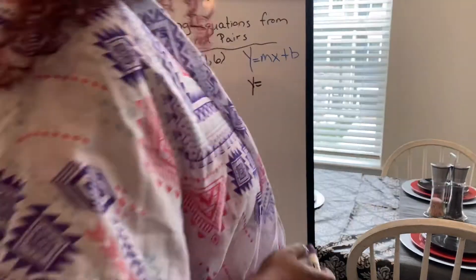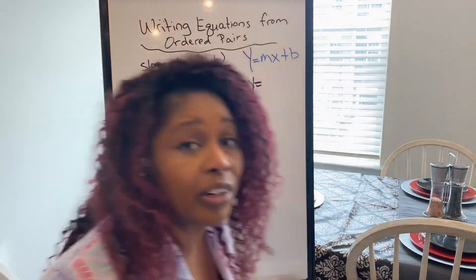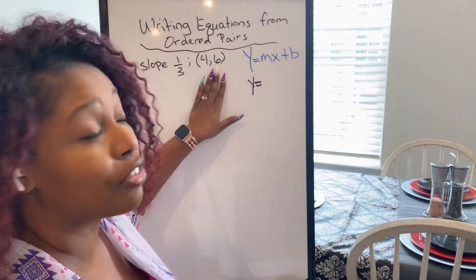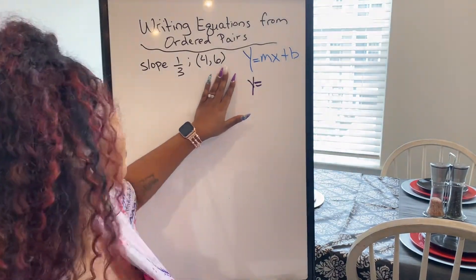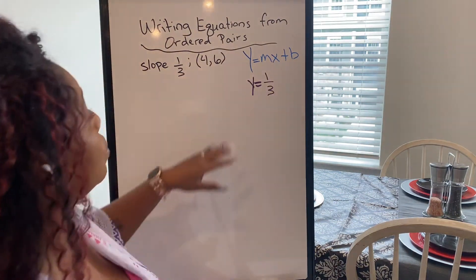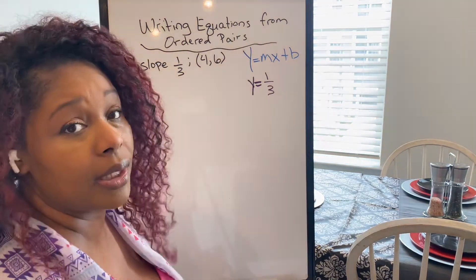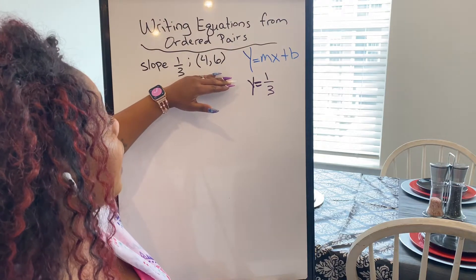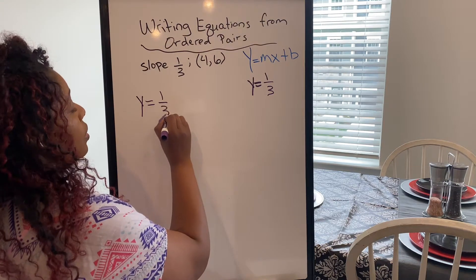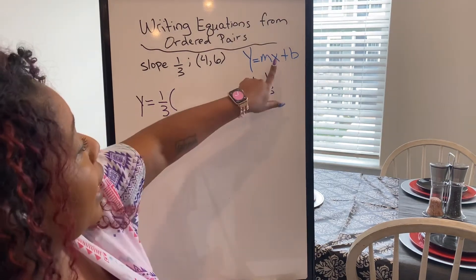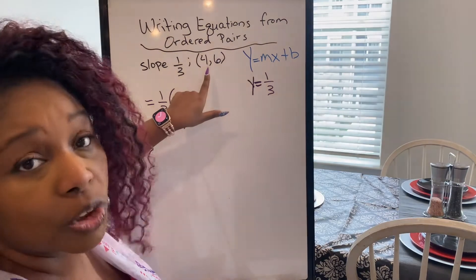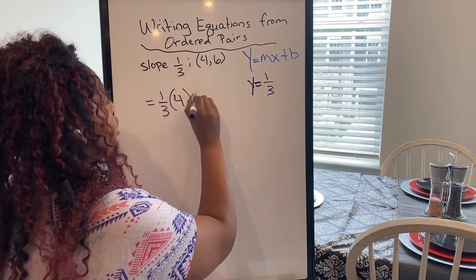The first thing I need to do is look at the information that I already have. This is my known information. I know that my slope is one third, and I know that I have a set of points that is four and six. So I'm going to fill in what is my slope — my slope is one third. I do not know what my x value is, and I do not know what my b is. So you're going to take what you know and fill it into the equation. I know that one third times whatever my x value is. My x value for this situation is four, so I put a four here plus b.